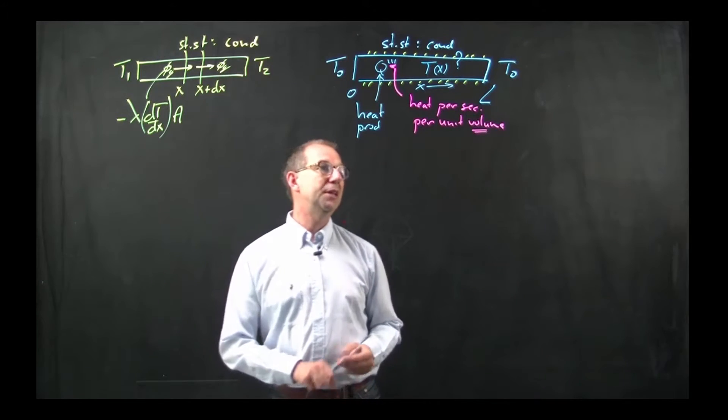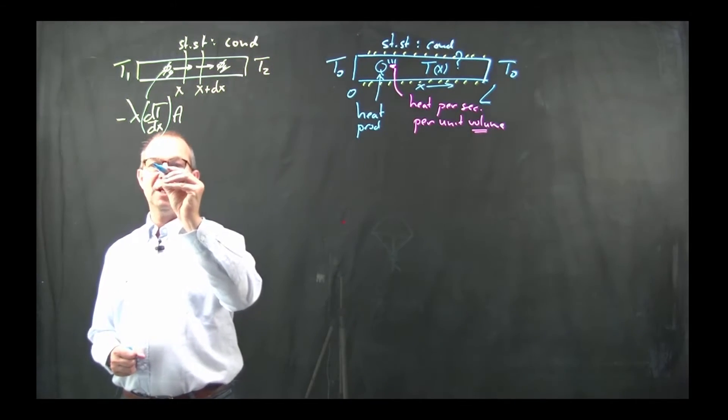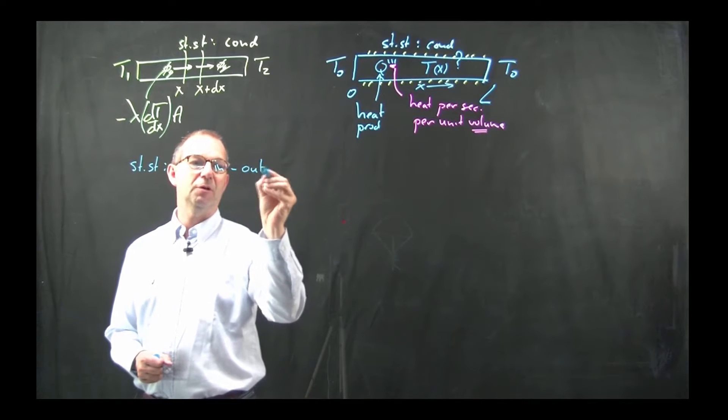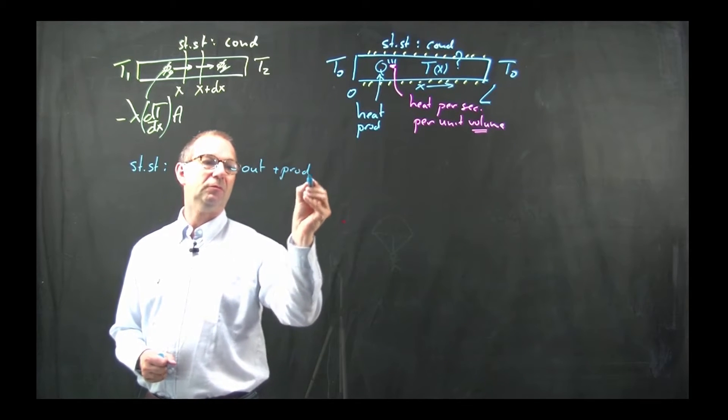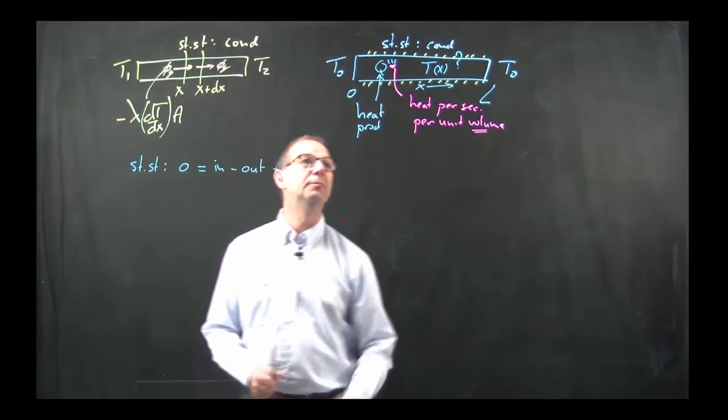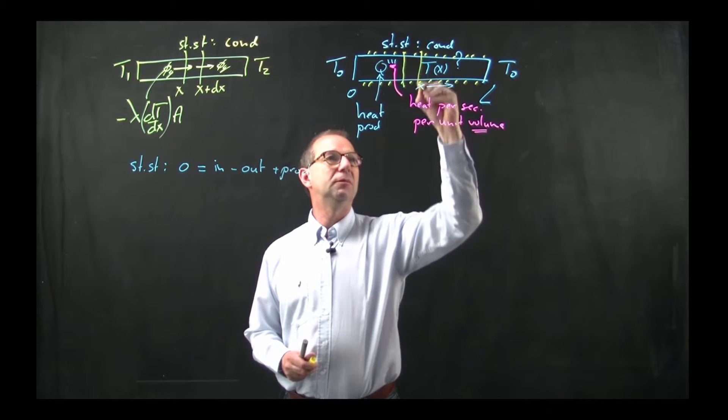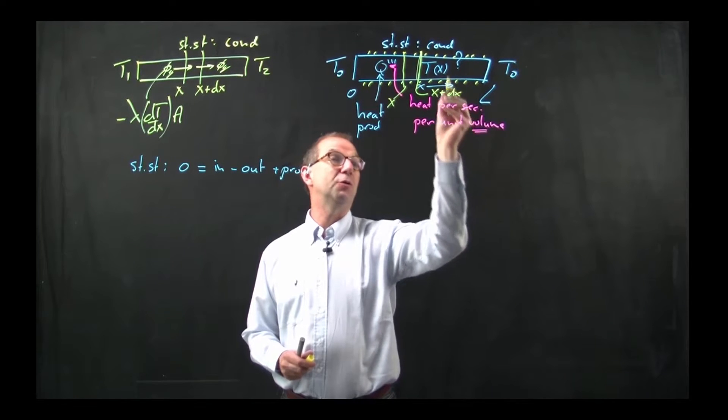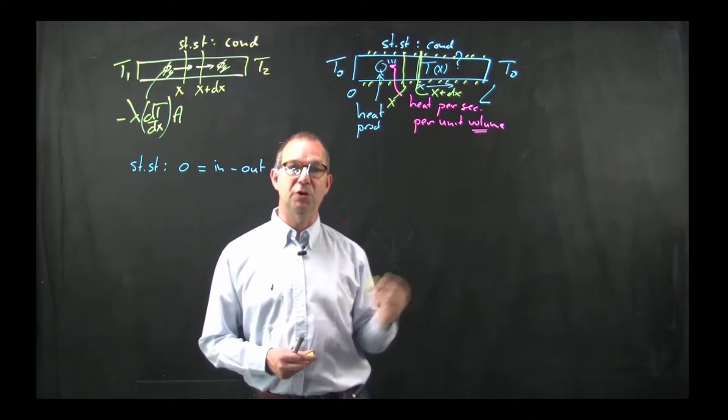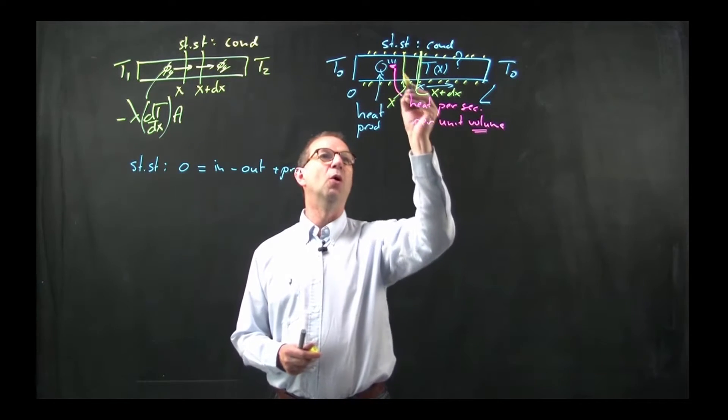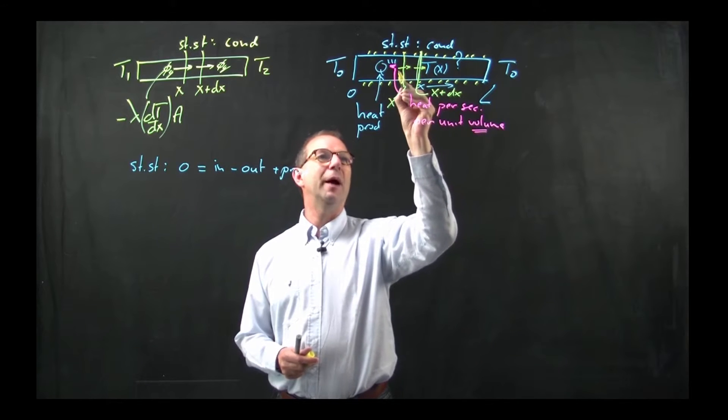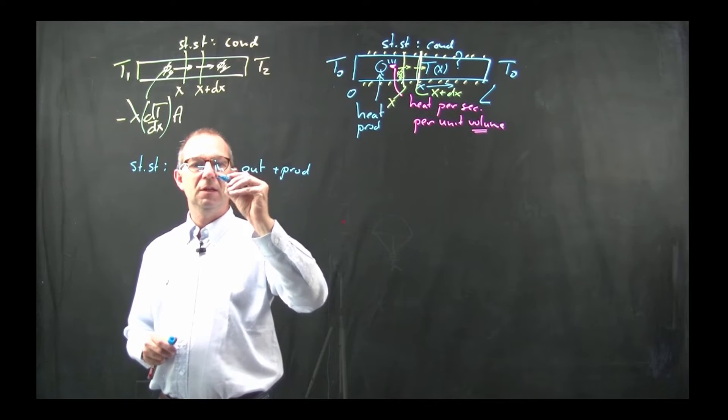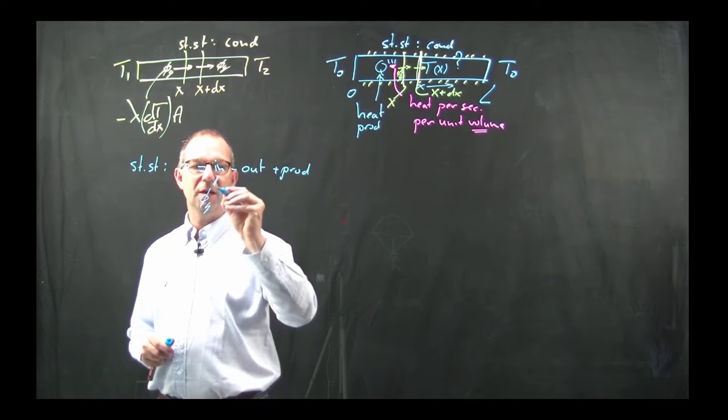I know what to do. I need to set up my balance and that is a steady state. So this starts with zero equals what flows in my control volume minus what goes out plus the production. I am going to sketch one. This is my control volume at x and x plus dx, because I need to find the temperature distribution as a function of position. This is an arbitrary small control volume, stuff is flowing in and flowing out.